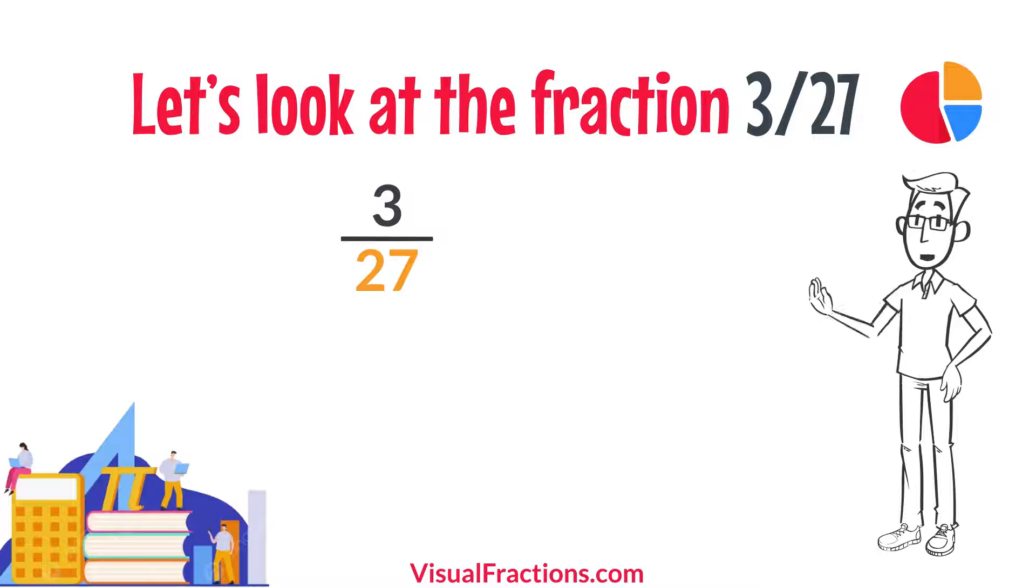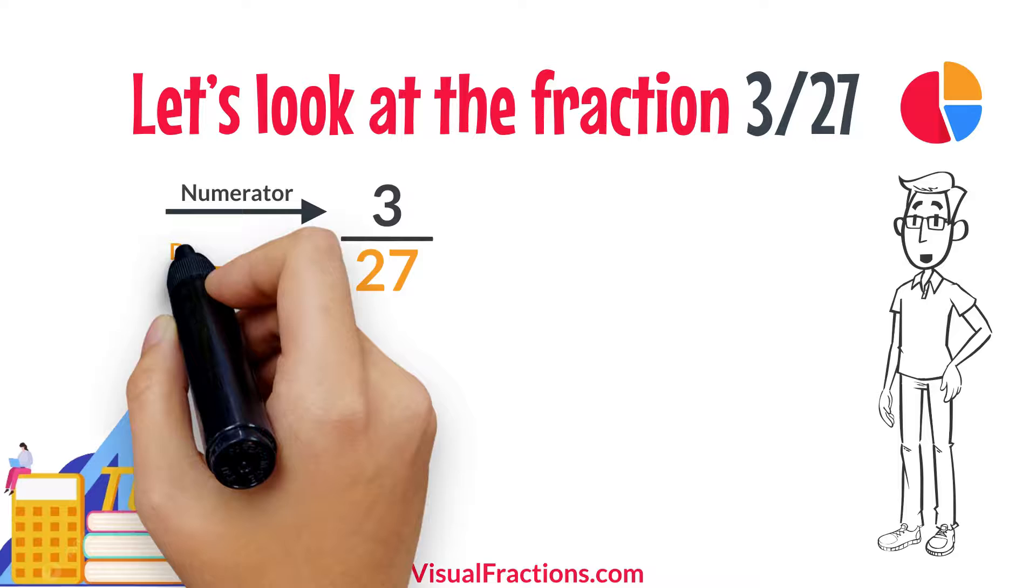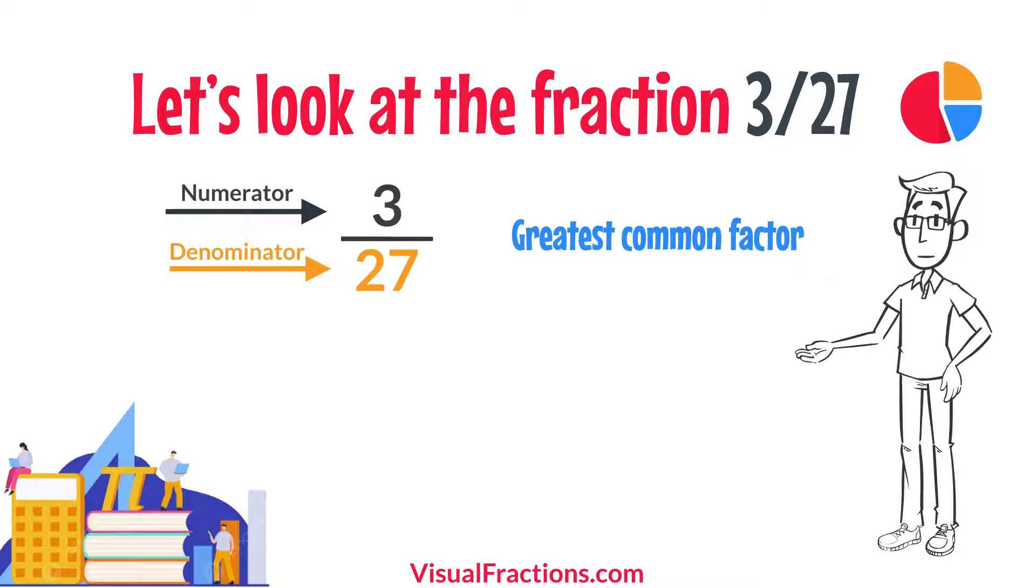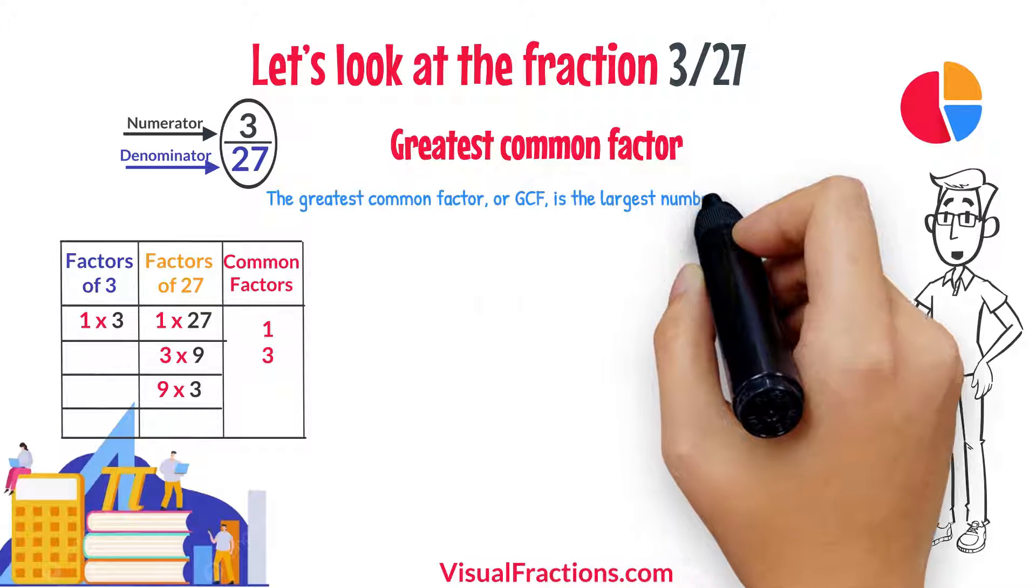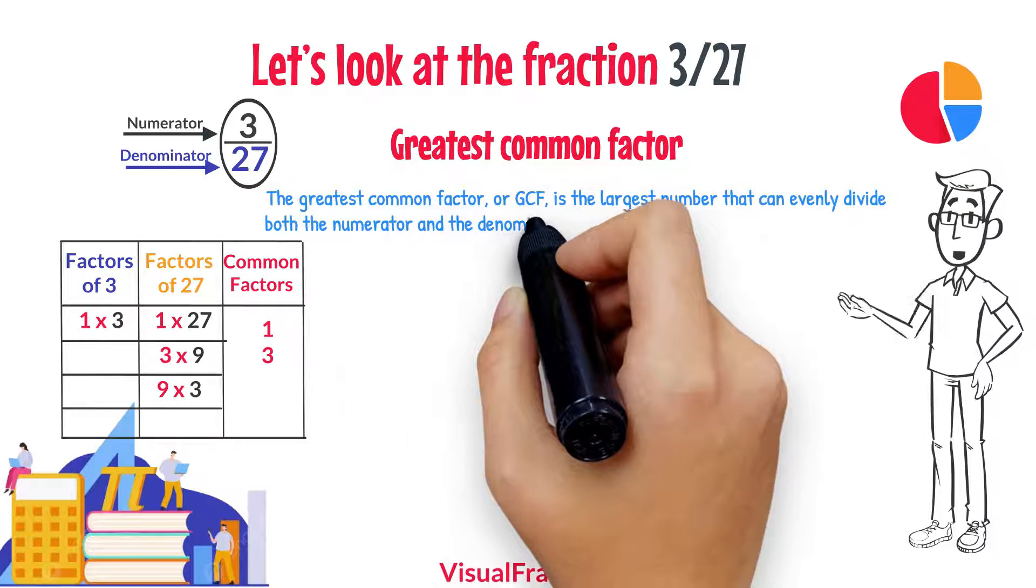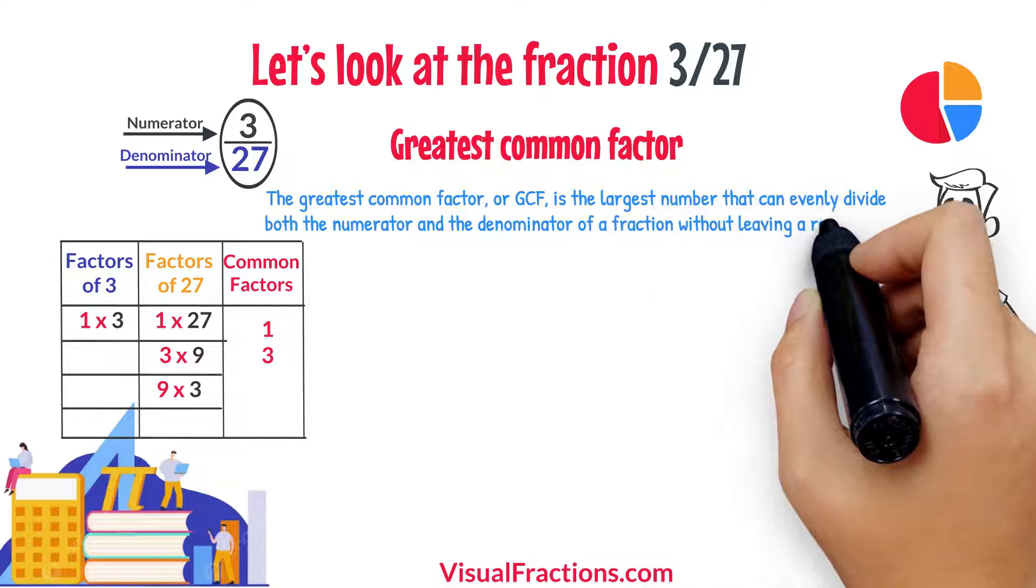Let's look at the fraction 3 27ths. To simplify it, we'll divide both the numerator and the denominator by their greatest common factor. The greatest common factor, or GCF, is the largest number that can evenly divide both the numerator and the denominator of a fraction without leaving a remainder.